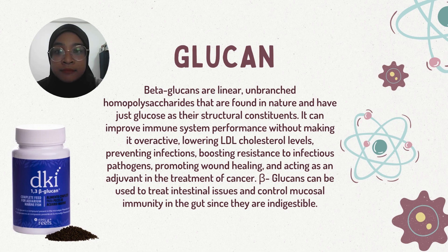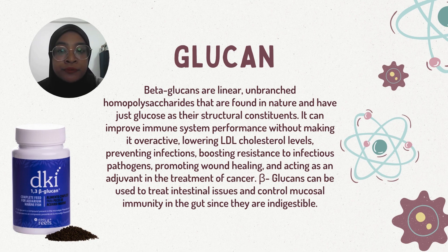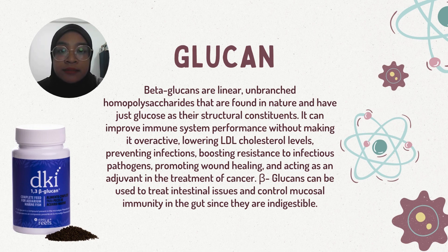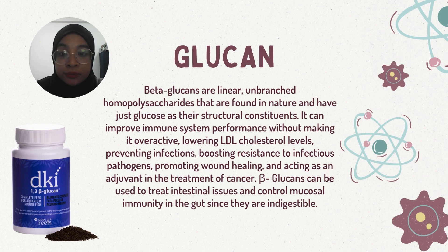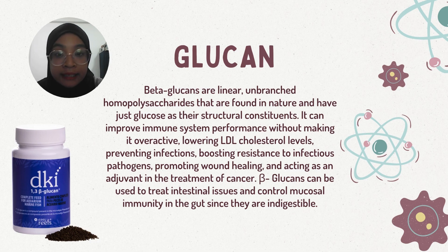Beta glucans are linear and branched homopolysaccharides found in nature that have glucose as their structural constituents. They can improve immune system performance without making it overactive, lower LDL cholesterol levels in fish, prevent infection, boost resistance to infectious pathogens, promote wound healing, and act as adjuvants in cancer treatment. Beta glucans can also be used to treat intestinal issues and control mucosal immunity in the fish gut, as they are indigestible.